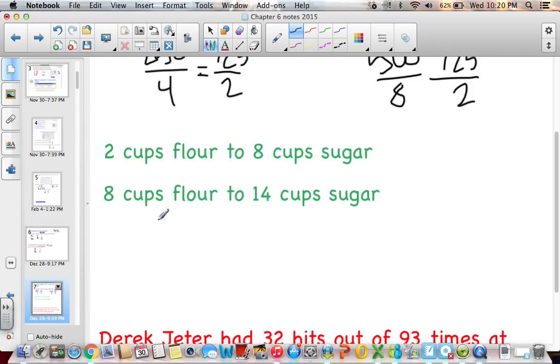2 cups flour to 8 cups sugar. So 2 to 8. And then 8 to 14. 8 cups flour to 14 cups sugar. So if I simplify this, 2 divided by 2 is 1. 8 divided by 2 is 4. And then 8 divided by, wait, we can divide both by 2. So we have 4 and 14 divided by 2 is 7. This cannot be simplified more. This cannot be simplified more. So being that they are not the same, they are not equivalent.